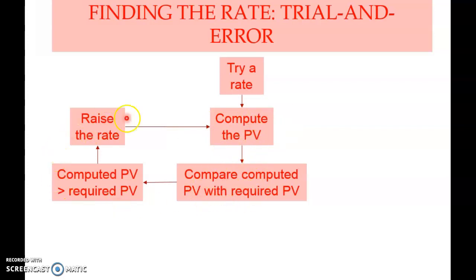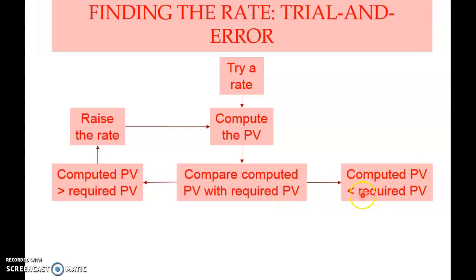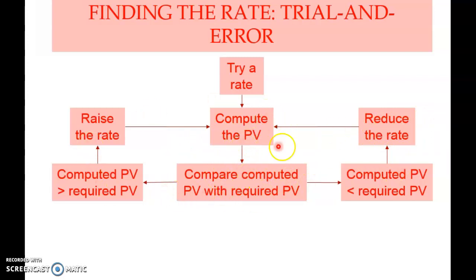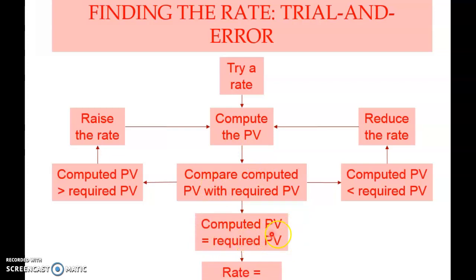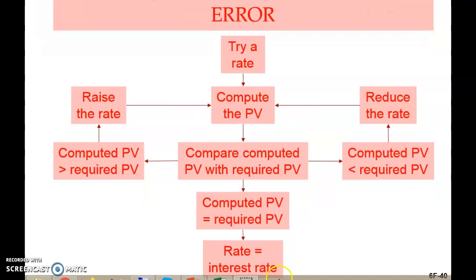Compare the computed present value with the required. If computed is less than required, you have used a higher discount rate, so reduce the rate and compute again. Repeat this process — raising or lowering the rate — until the computed present value equals the required present value. The rate at which they match is the interest rate.